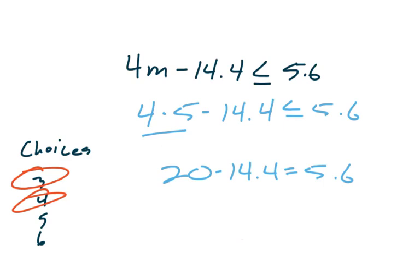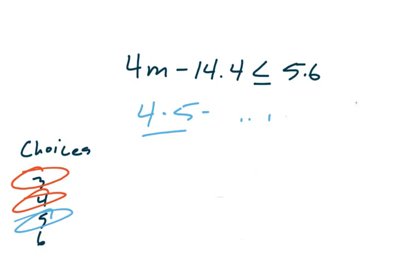Well, that gives us a question. Is 5.6 less than or equal to 5.6? And it turns out that because it's or equal to right there, it works. And I think you can guess that if we try 6 in this inequality, 6 is not going to work. So we just say no on that one, and we know that 3, 4, and 5 are possible solutions.